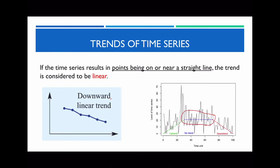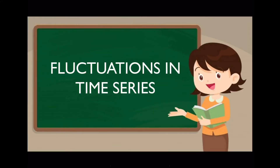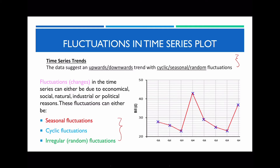If the time series results in points being on or near a straight line, we consider that to be linear. You need to comment on whether it's upward or downward and whether it's linear or non-linear. On the first example on the left, we refer to this as a downward plus linear trend as it falls along a straight line. However, on the other example, we refer to this as no trend — there's really no progression at all, no rise, so we say there is no trend.